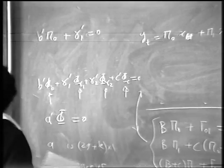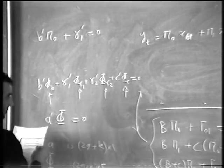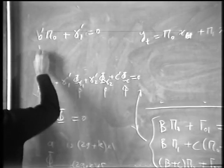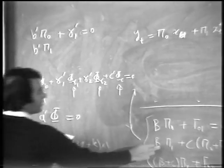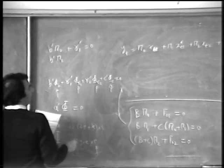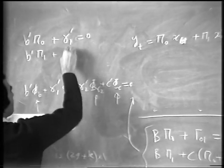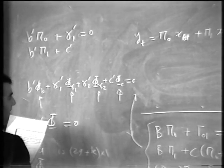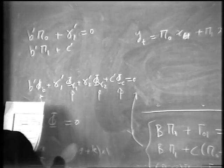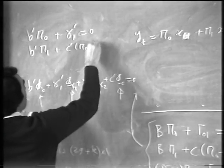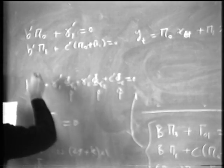I'll do the same thing for all of them. I get for the second one, it's very obvious now, becomes B prime pi 1 plus, let me just write it as C prime, pi 0 plus pi 1 equal to 0. And finally,